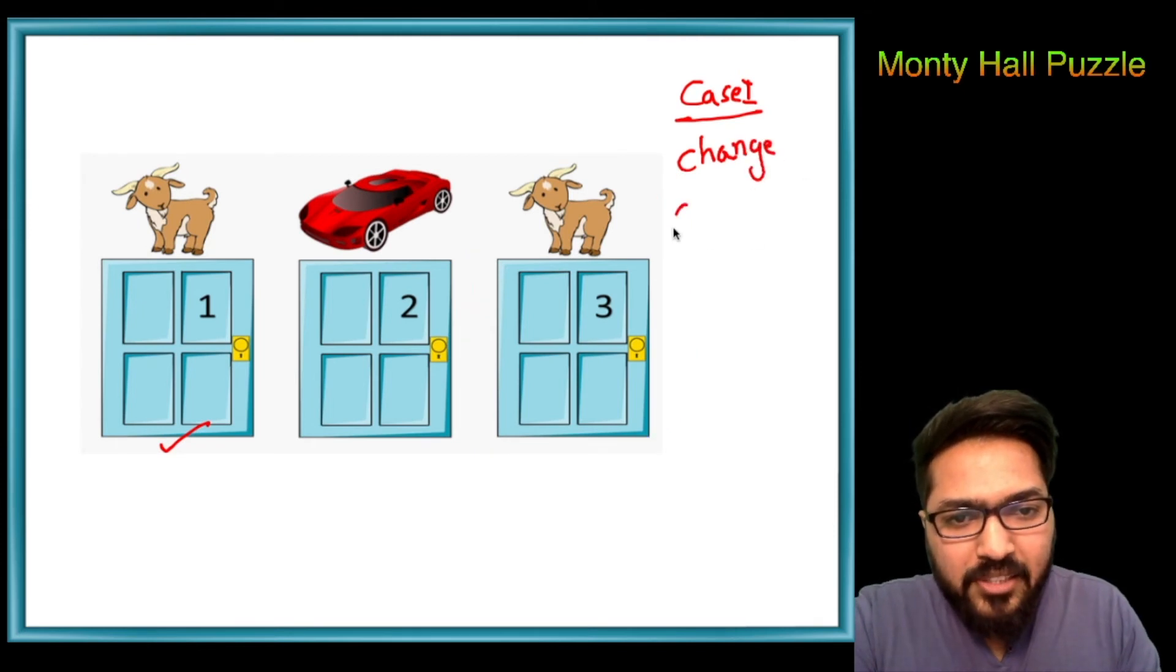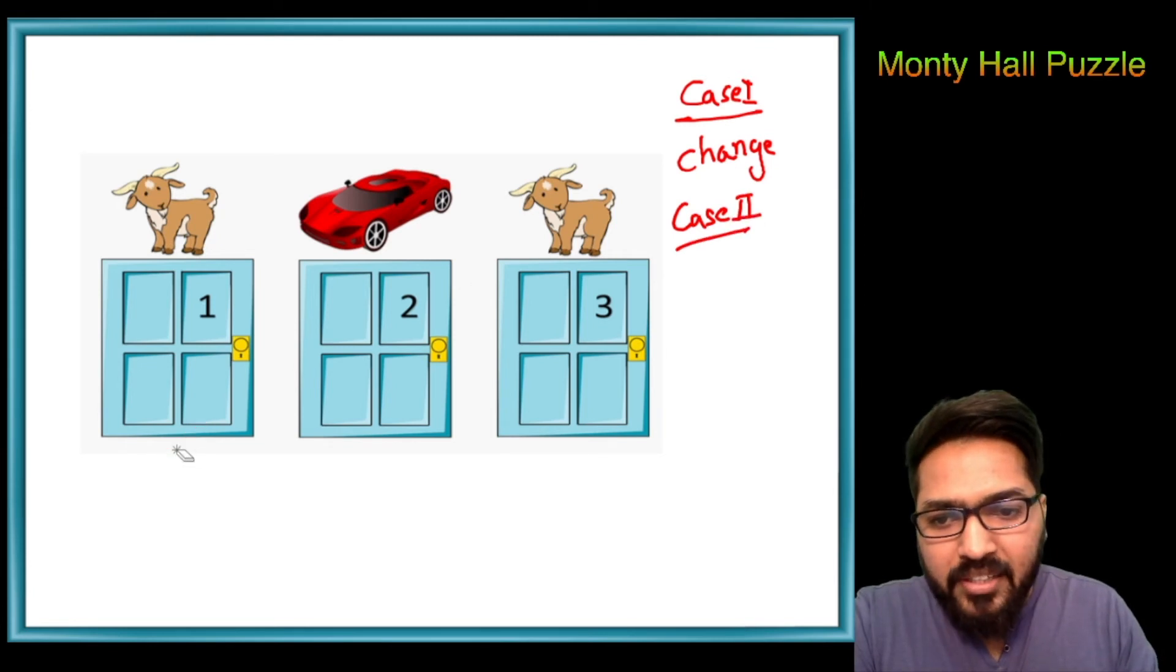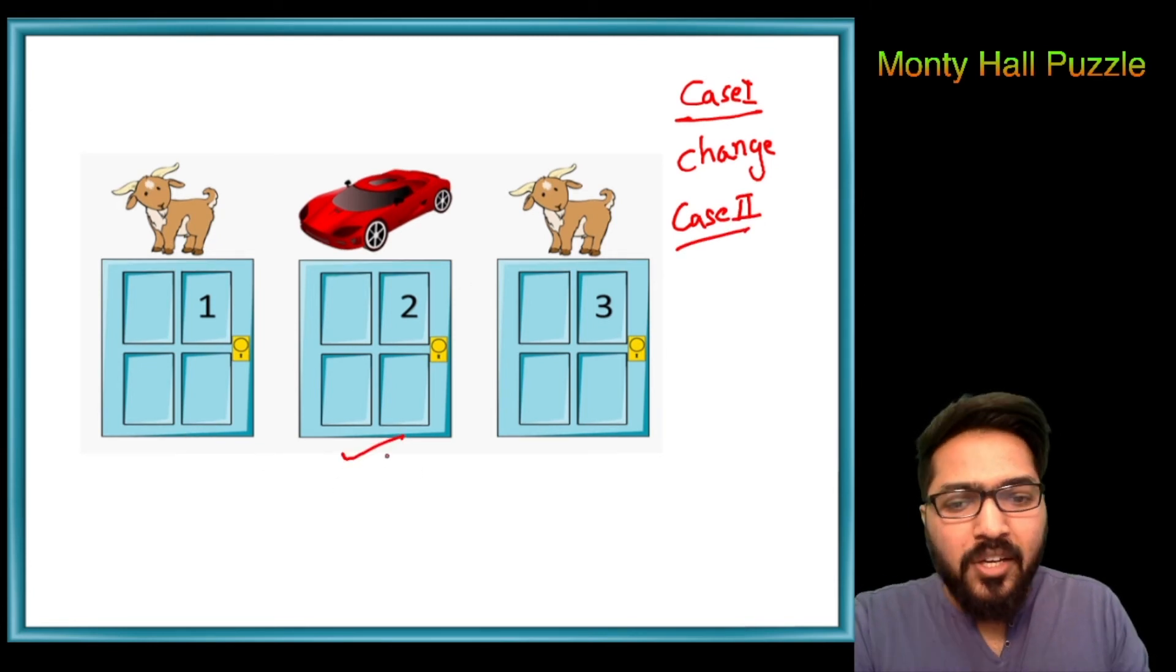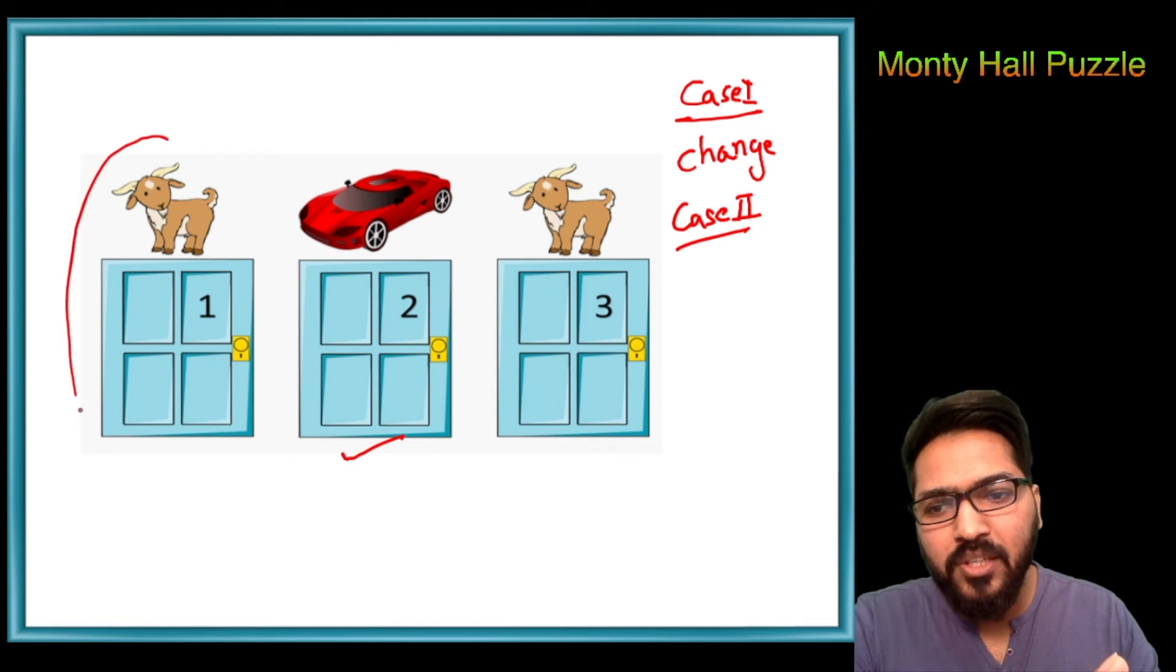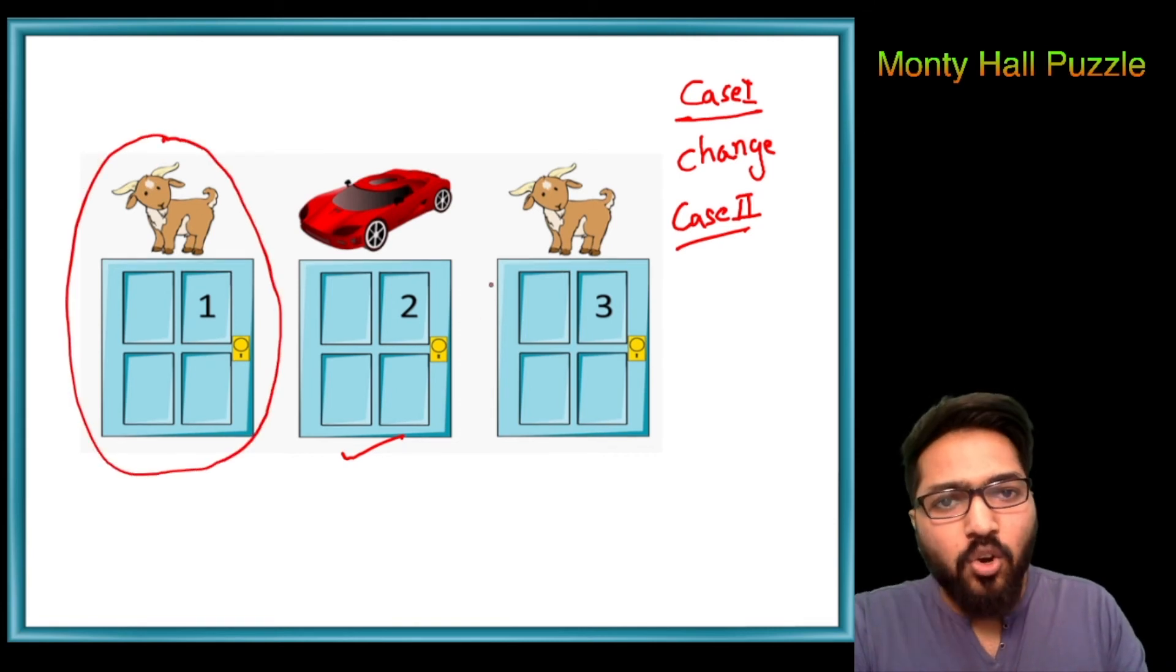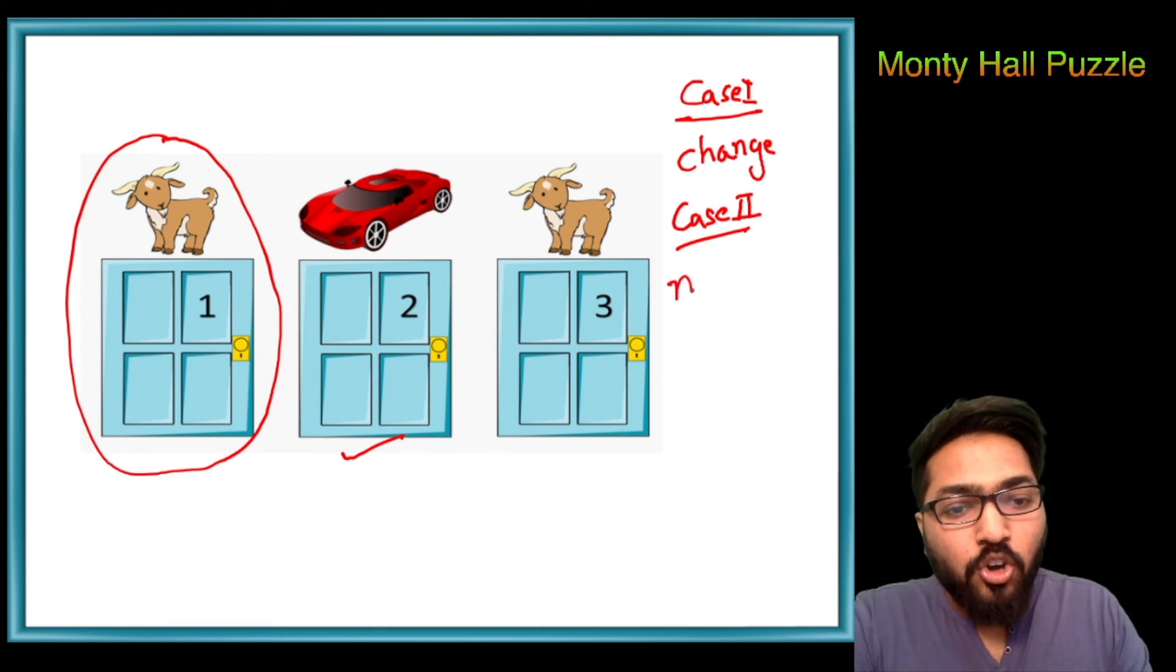Let's look at case two. In case two, if my contestant chooses door two, now the game show host can open either door one or three because dono ke pichay goat hai. So koji bhe kholke dikha dega. Let's say usne ye wala kholke dikha diya. Now the contestant will be asked whether he wants to change his decision from two to three. If he wants to win the car, he should not change it.